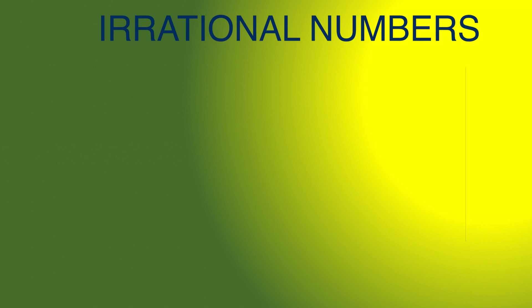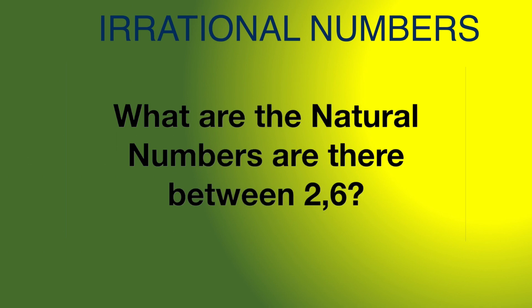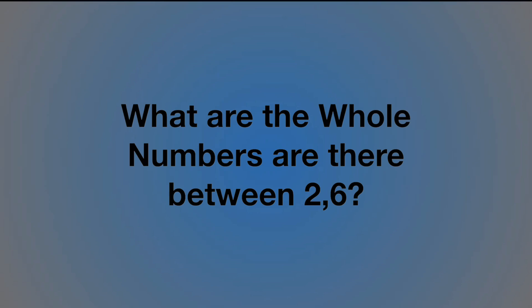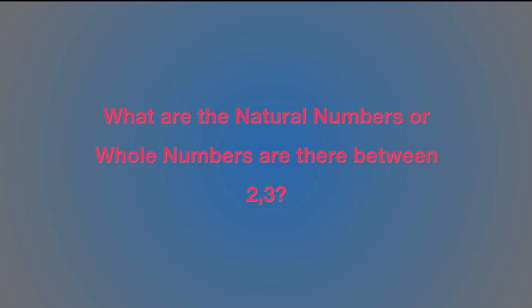Students, what are the natural numbers between 2 and 6? There are 3, 4, 5. What are the whole numbers lying between 2 and 6? 3, 4, 5 lie between 2 and 6. Now, what are the natural numbers or whole numbers lying between 2 and 3? There is no natural number or whole number between 2 and 3. But we have infinite rational numbers and infinite irrational numbers between 2 and 3.